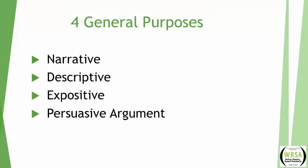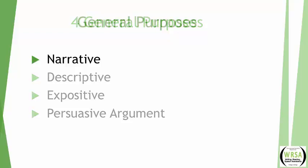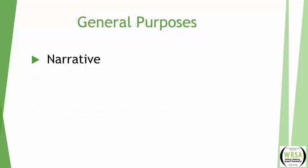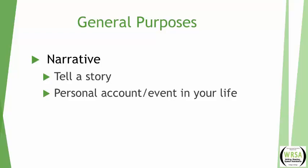There are four general purposes for writing. The first is the narrative purpose — that's when you are trying to tell a story about something. You might use a narrative to write a personal account of something, like if a teacher asks you to tell about an event in your life: how did you come to be here, or why did you come to college? Anything that has some sort of story involved in it would be a narrative.